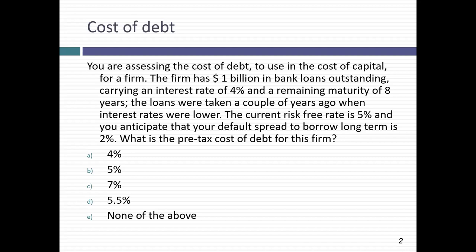If you use 4%, you're looking at the actual cost of debt on your books — the book interest rate. About two-thirds of DCFs I see do this. But there's something fundamentally wrong: the risk-free rate is 5%, so arguing that your cost of debt is 4% when the risk-free rate is 5% makes no sense — even if you never plan to borrow more money and have locked in this debt.